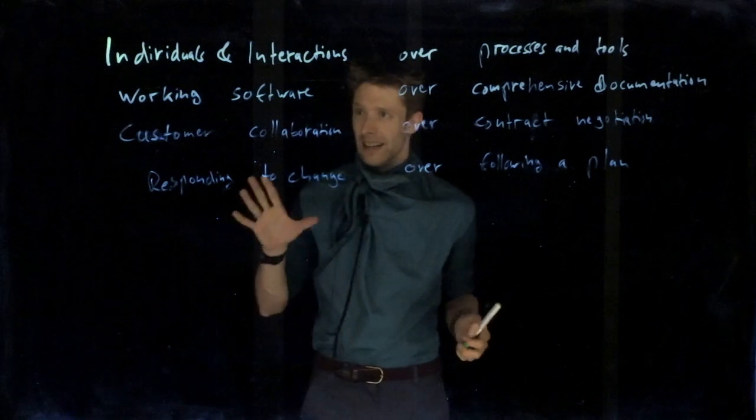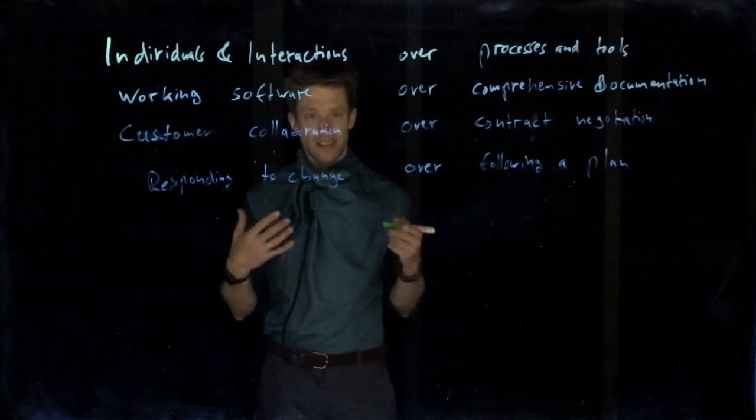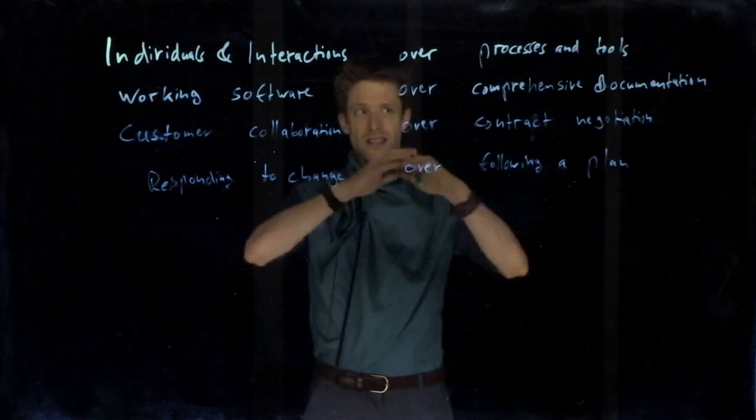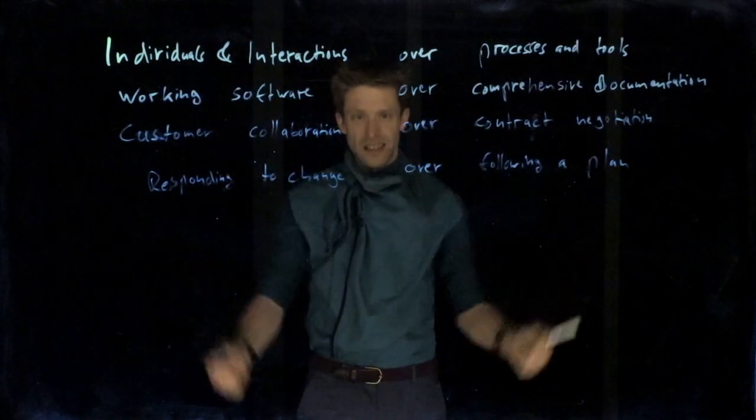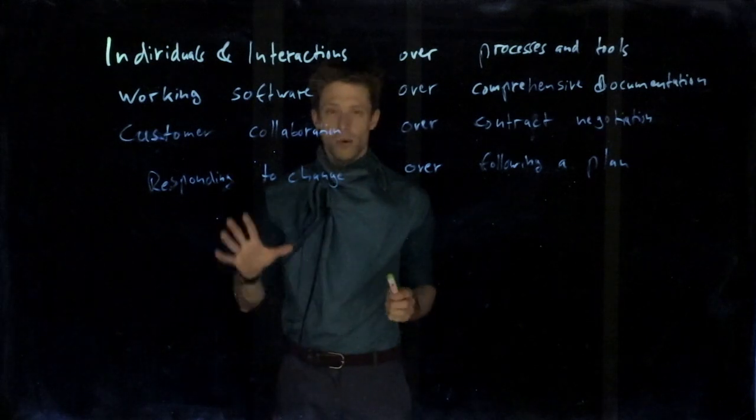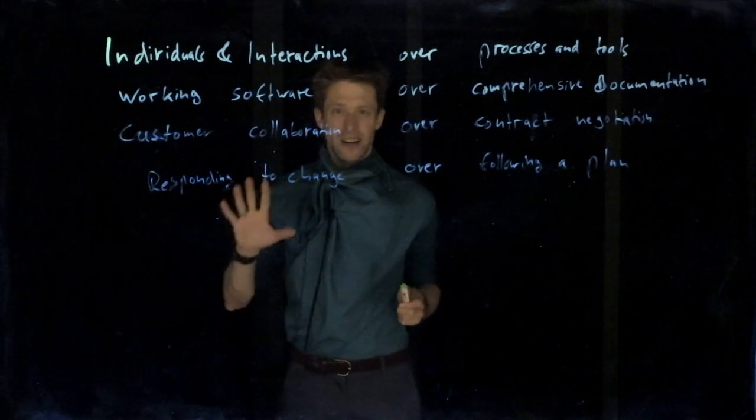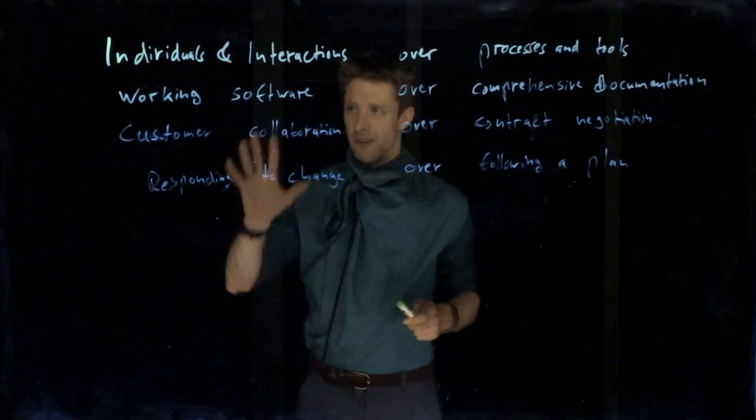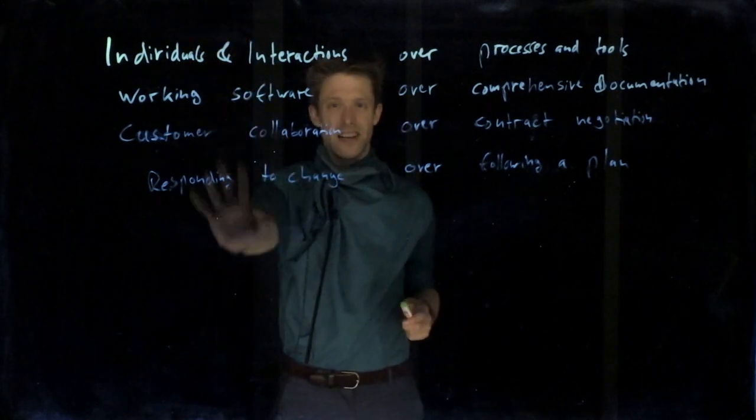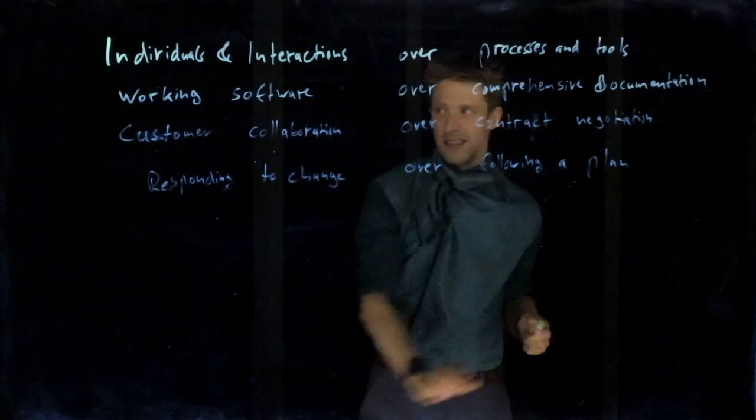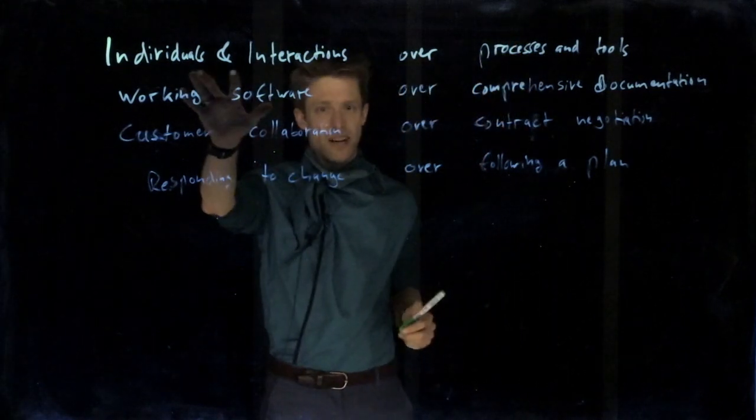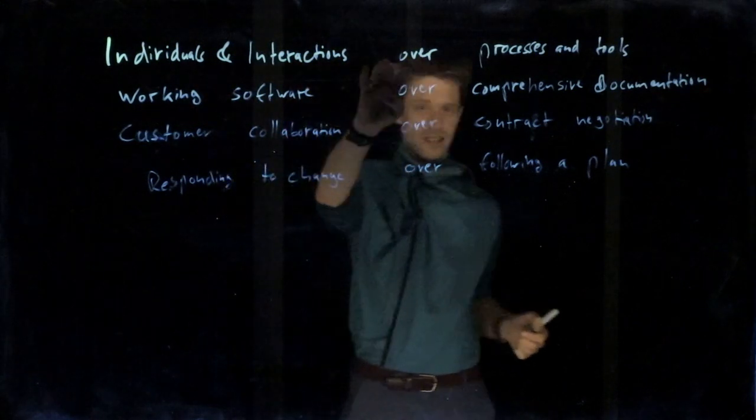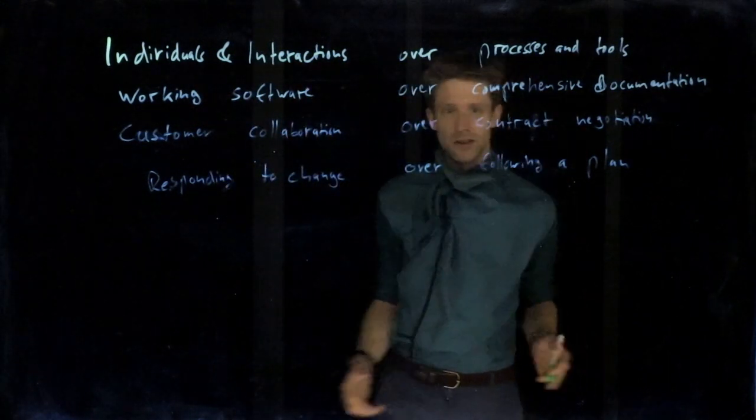That's when a couple of people got together and came up with the so-called agile manifesto. They presented, among other things, four statements that describe what they are doing to develop software successfully. What they said is that we value these things on the left over what's on the right. Individuals and interactions, having people and talking to each other, is more important and valued over having processes and tools.